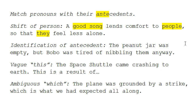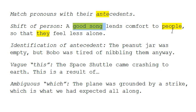Now there seems to be a confusion about what the antecedent is. However, there's no confusion because 'they' is plural in number and 'people' is plural in number as well, whereas 'a good song' is singular. Therefore, 'they' refers to 'people' and not to 'a good song.' A good song lends comfort to people so that they feel less alone.